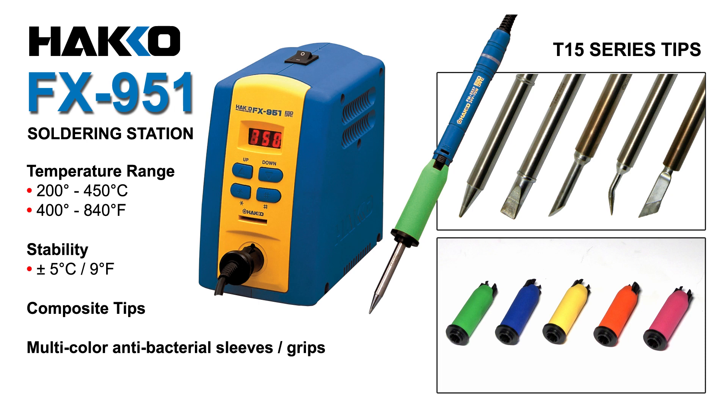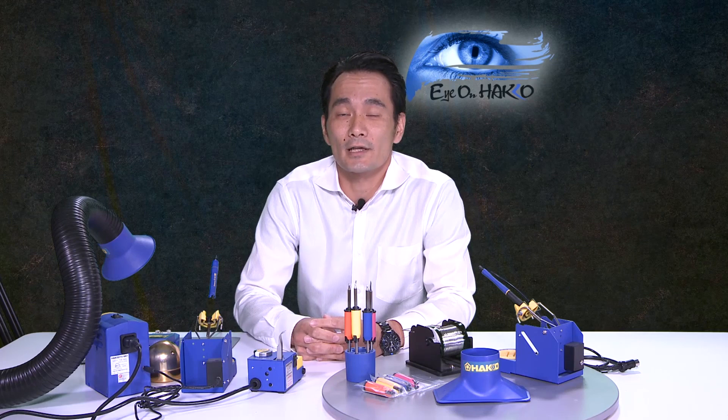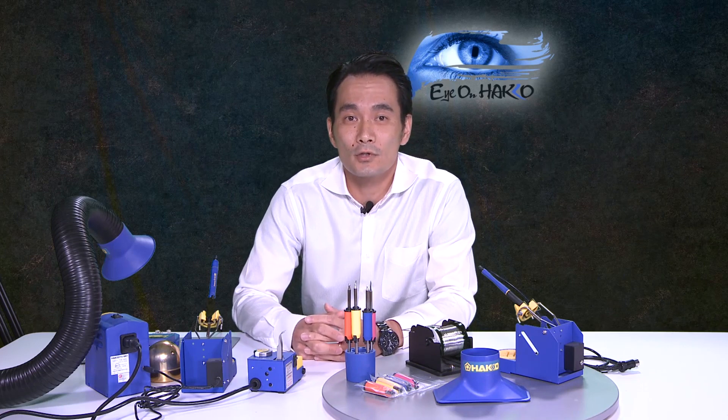That was with the standard iron, the FM-2027. There are multiple color sleeves you can attach to the FM-2027: green, yellow, orange, blue, and we even have a pink sleeve. These sleeves are actually antibacterial, very comfortable in your hands and very clean to use.